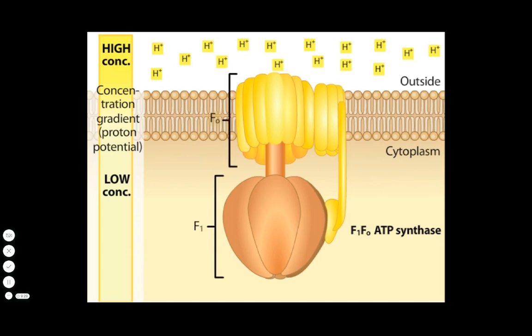F0 consists of 12 identical subunits designated C. A central stock, called the gamma subunit, extends from F0 through F1.